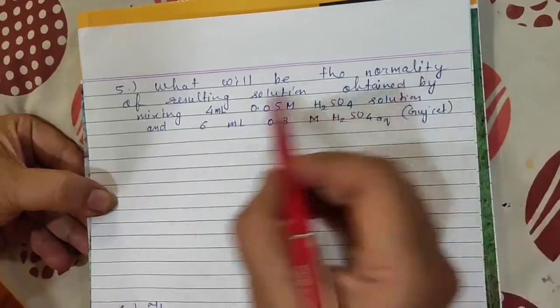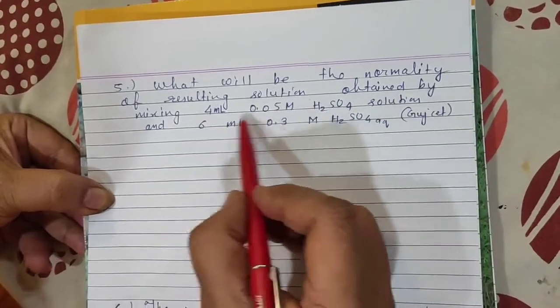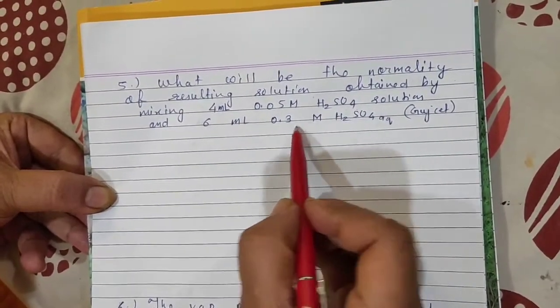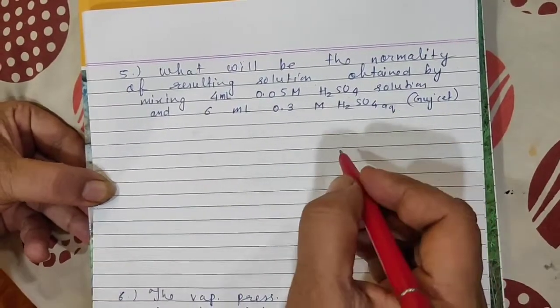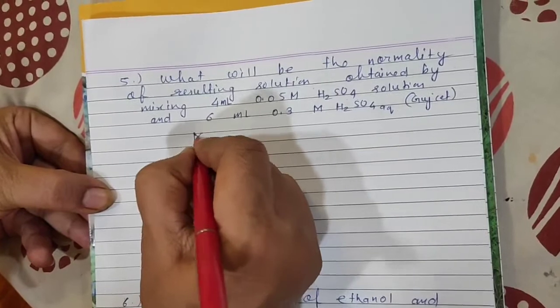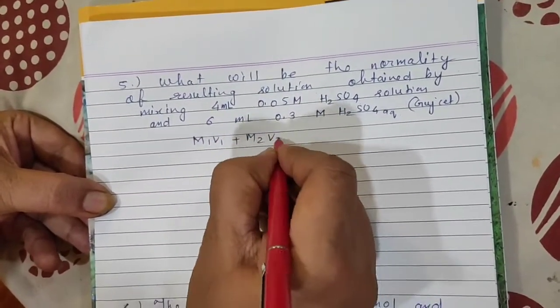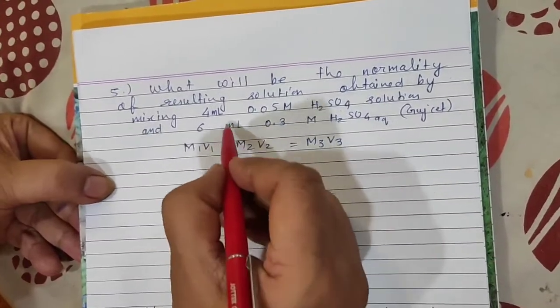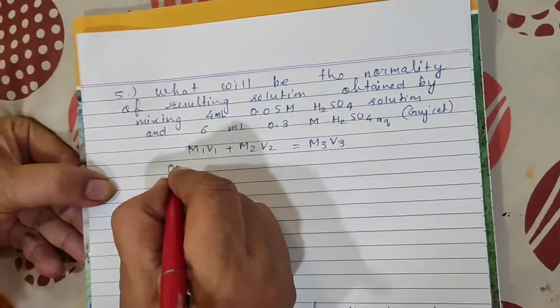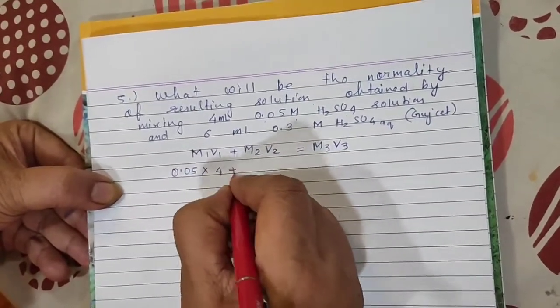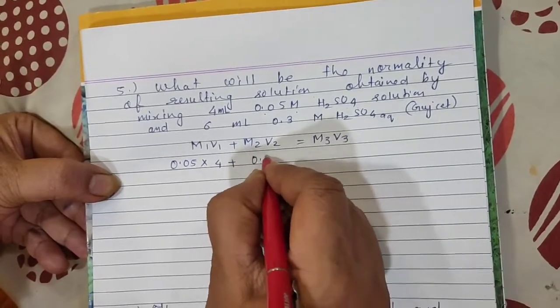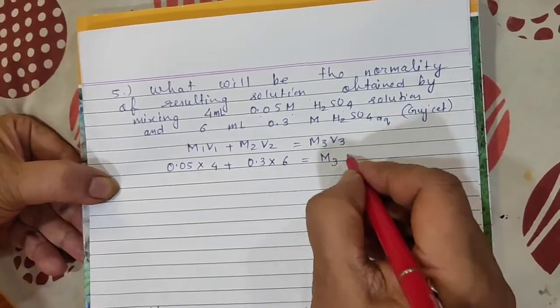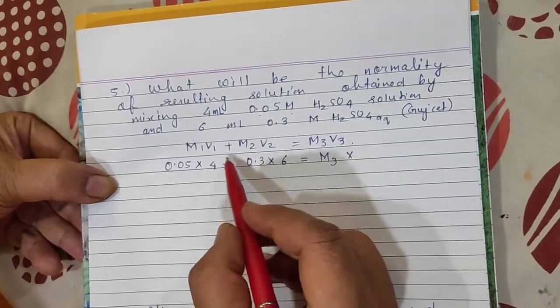Next question: what will be the normality of resulting solution obtained by mixing 4 ml 0.05 molar H2SO4 solution and 6 ml 0.3 molar H2SO4 solution? In this what formula we will use? M1V1 + M2V2 = M3V3.